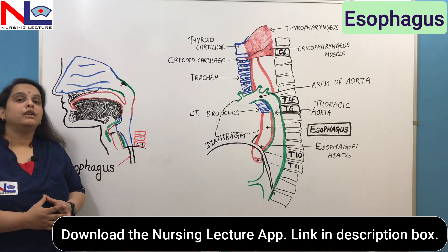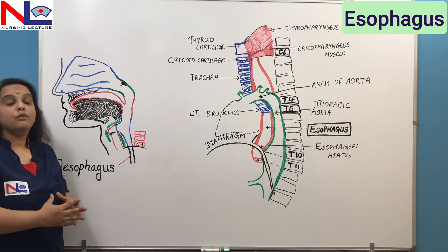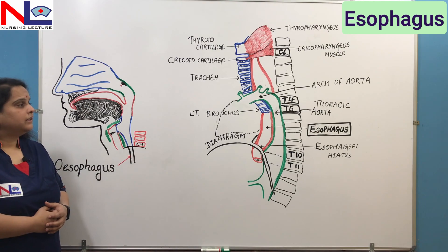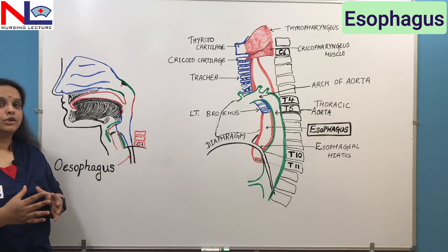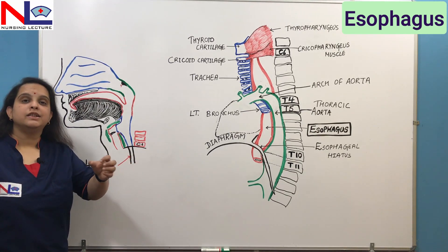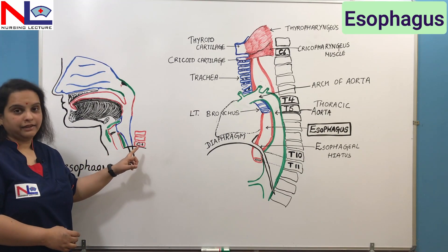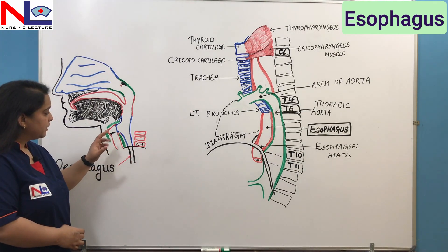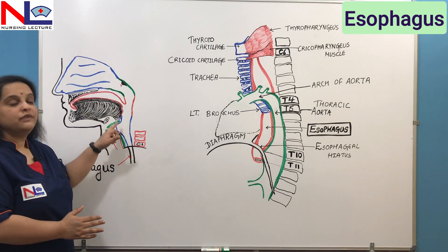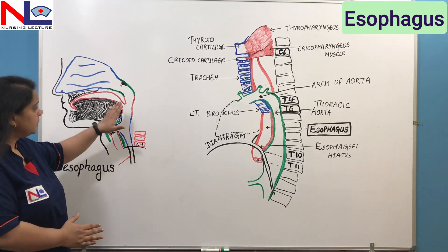Now let's see what the esophagus is, where it is situated, what layers are present in the esophageal wall, and what its relation is with the other organs situated nearby. The esophagus is a muscular tube that extends from the lower part of the neck. Since we already discussed the pharynx, we know that it comes below the pharynx.